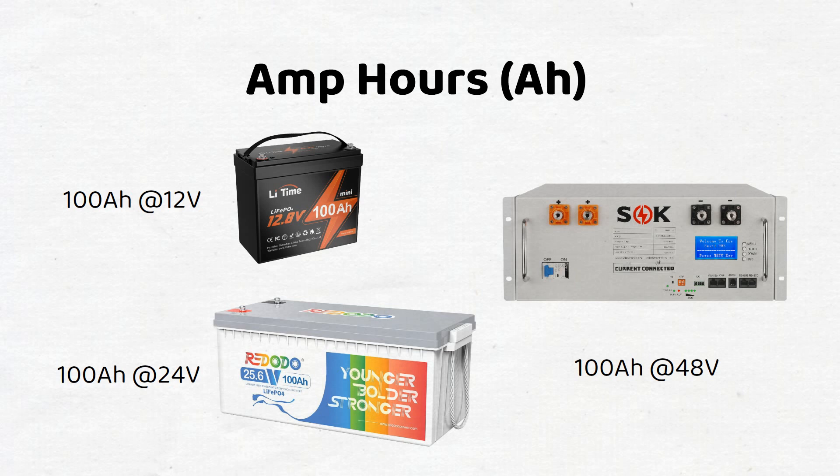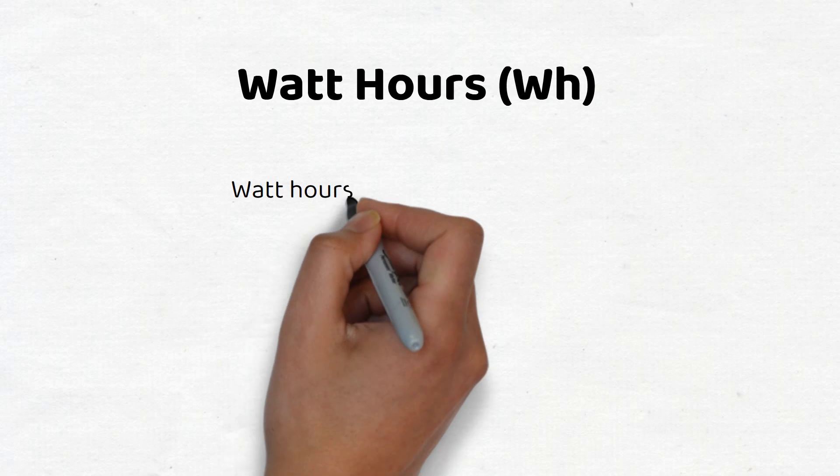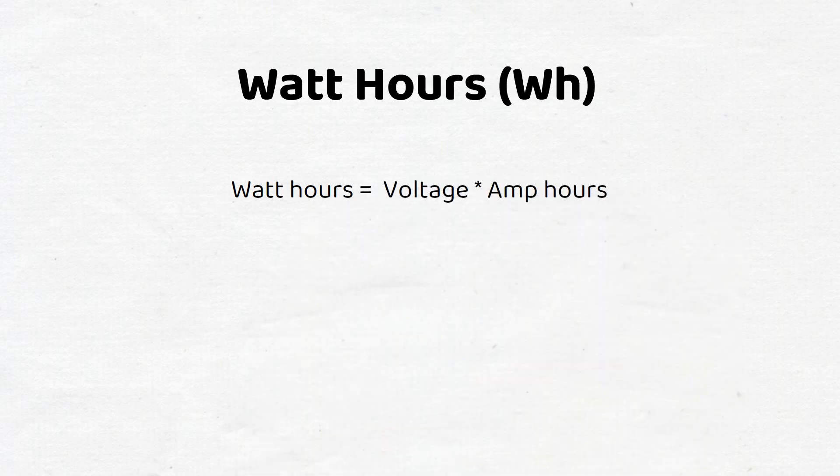That's why we use watt hours to accurately measure the energy capacity of a battery, because watt hours takes into account the voltage of the battery. Watt hours, or WH, represents the total energy a battery holds. It's the product of the battery's voltage and its capacity in amp hours.